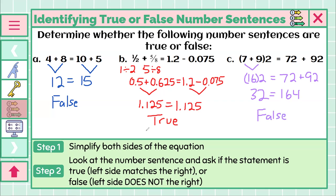With that, pause if you need to get your notes in. But the whole idea is simplifying the left side, and then simplifying the right side, and asking, do they match in the end? If they do, it is a true number sentence. If they do not, it is false.